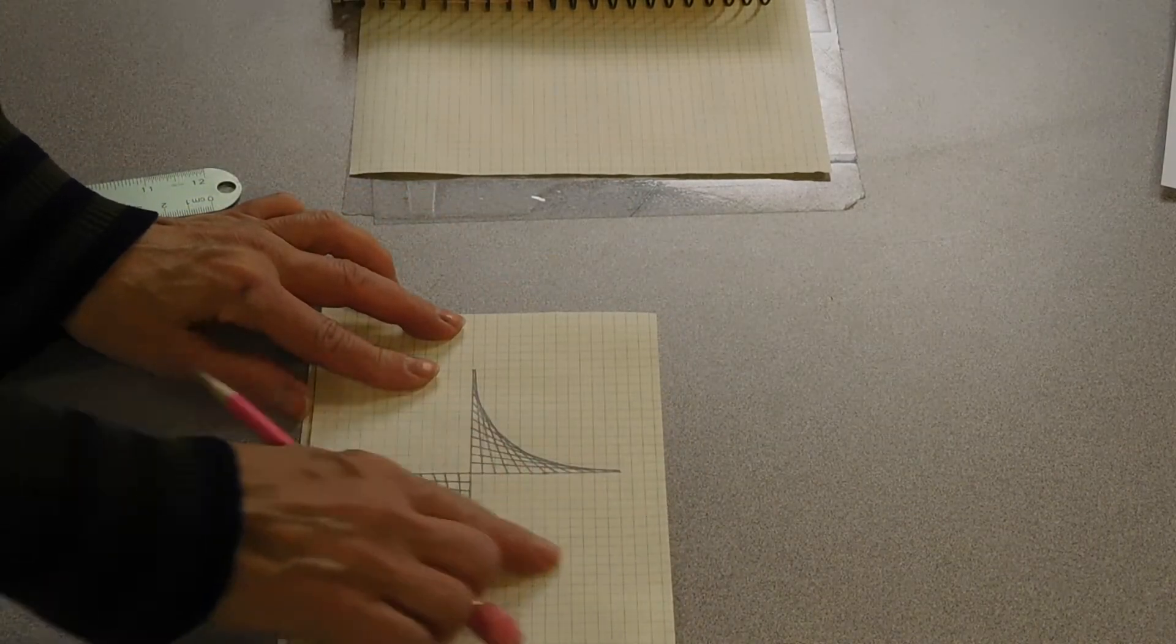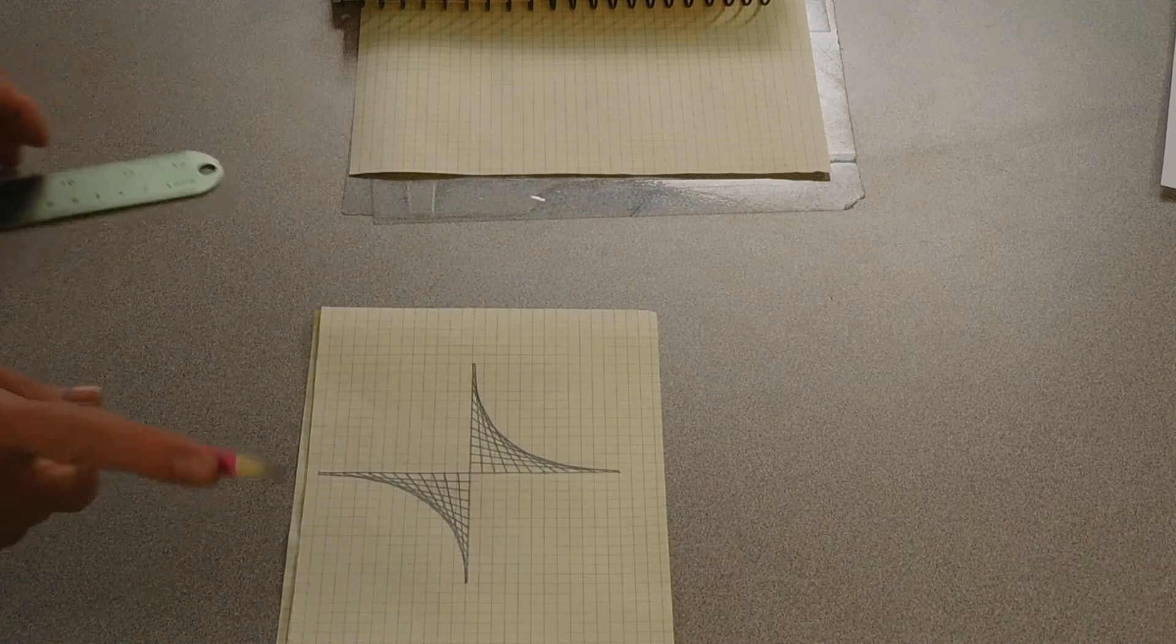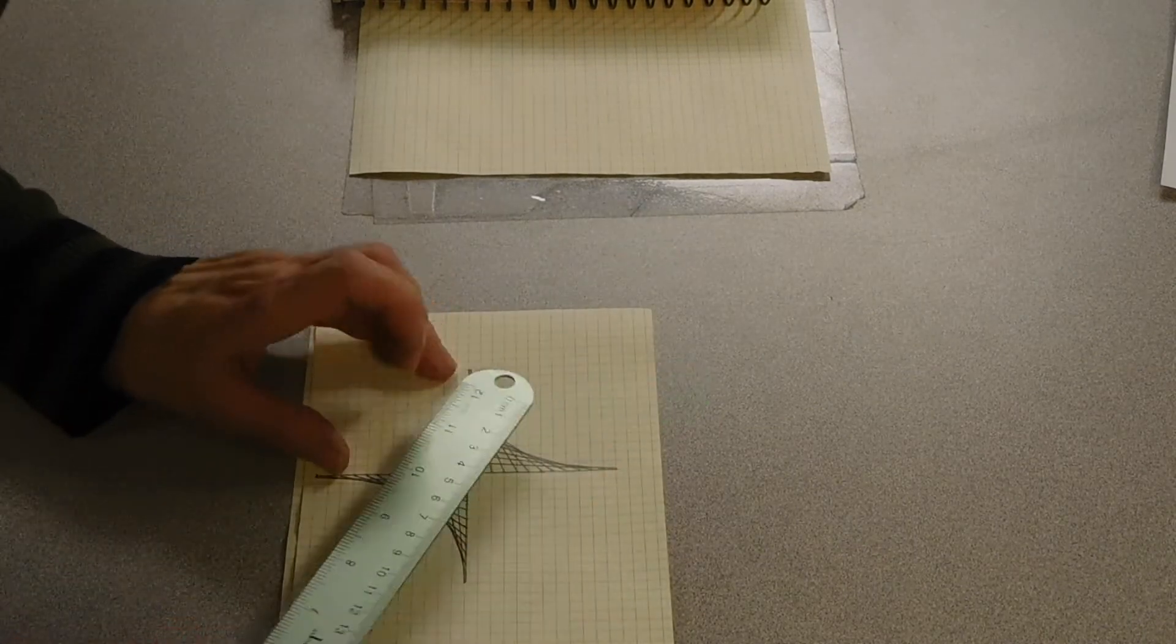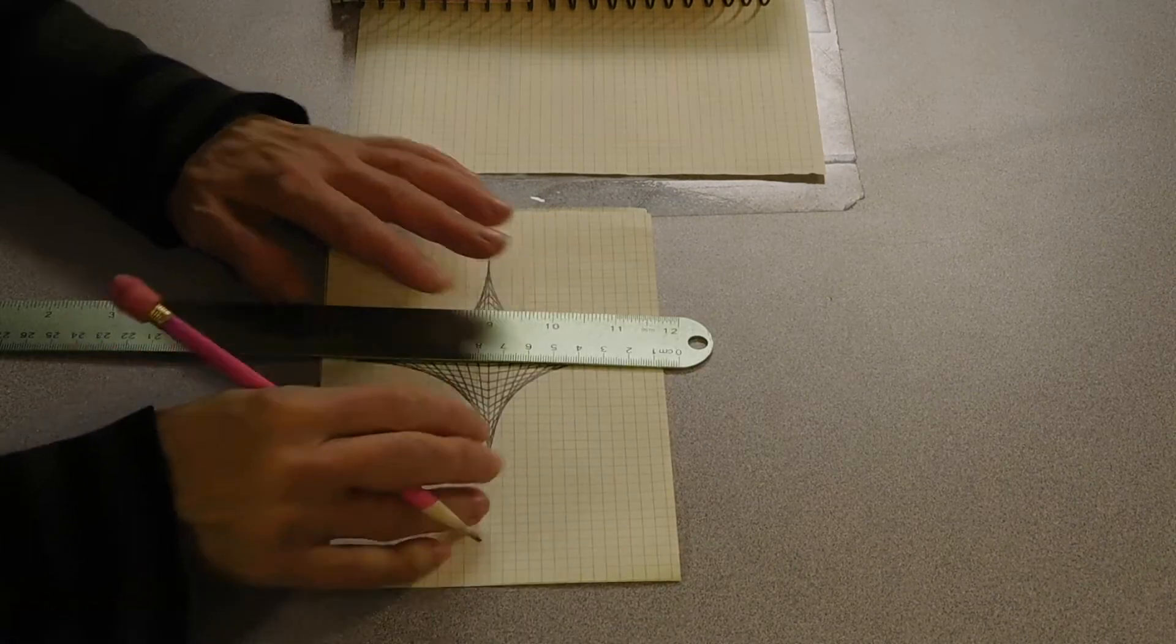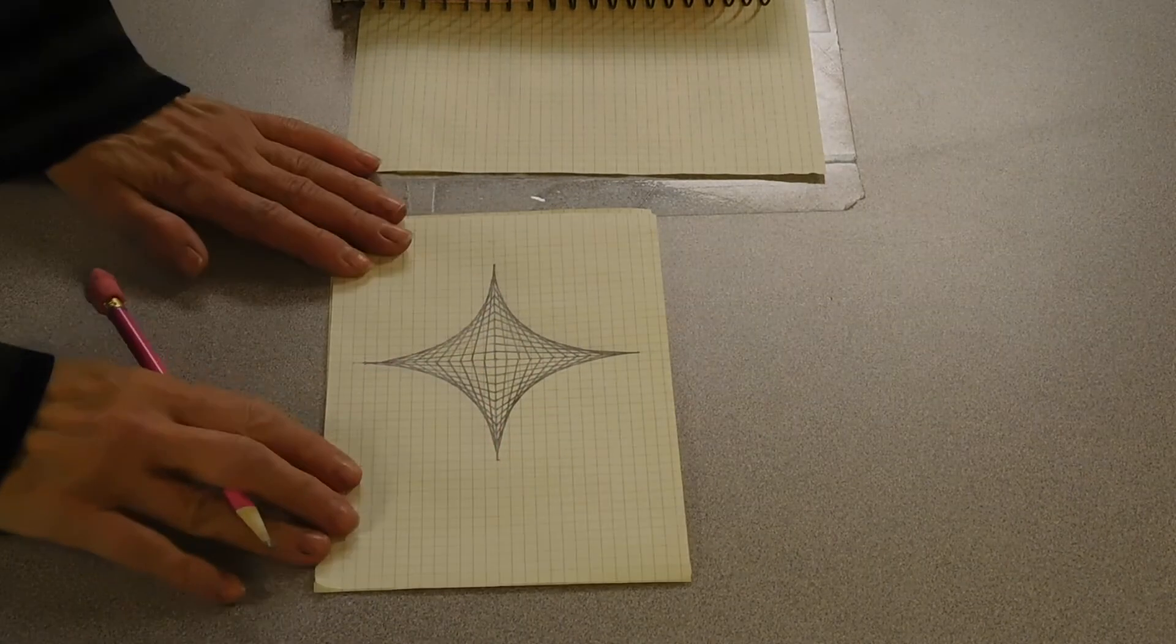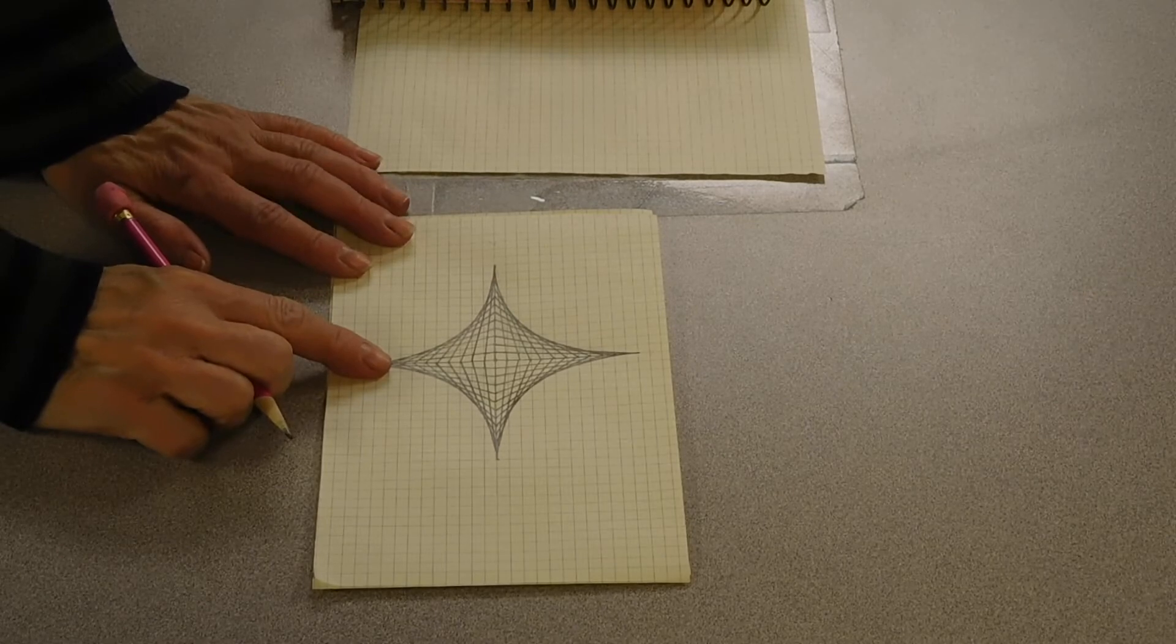Now, let's continue on, and we will fill in the other two quadrants as well. When we fill in those other two quadrants, we get a star shape.